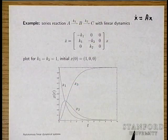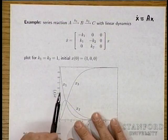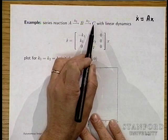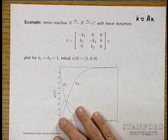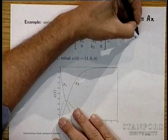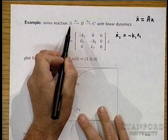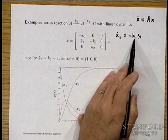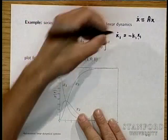Here's a very standard model: a reaction where species A converts or decays to species B, which in turn decays into species C. This looks like x-dot equals a matrix with minus K1 in the first entry. This means x1-dot equals minus K1 times x1, where x1 is the amount of species A present, and K1 is the reaction constant.